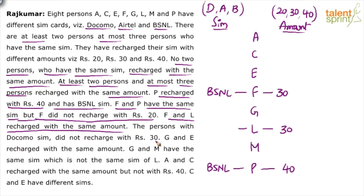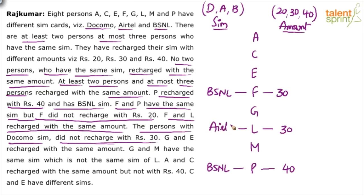The persons with Docomo SIM did not recharge with ₹30. So can L have Docomo? No — because L recharged with ₹30 and Docomo persons don't recharge with ₹30. L cannot have BSNL either. So both Docomo and BSNL are ruled out for L. The only option left is Atel. So L has an Atel SIM and recharged with ₹30. This point about Docomo persons not recharging with ₹30 may be useful again.